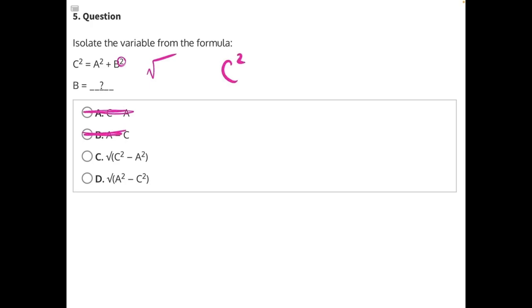Now we can begin to solve c squared equals a squared plus b squared. If we're trying to isolate b, let's get rid of everything that's not b, starting with a.